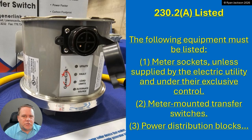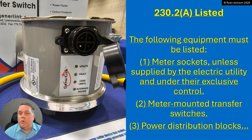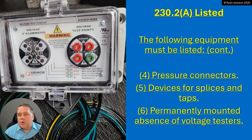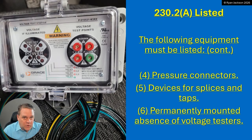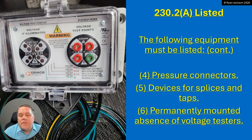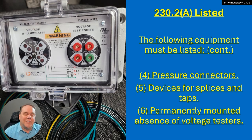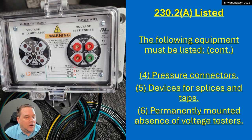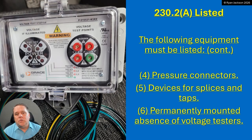Item three: power distribution blocks have to be listed products — that would be the item you'd maybe put in a wireway to make multiple splices. Pressure connectors have to be listed products — typically what you use for a lug has to be a listed product. Item five: devices for splices and taps, which are also usually pressure connectors — that would be power distribution blocks, a lug, twist-on wire connector, push-in wire connector — anything you're using to splice or tap service conductors has to be listed.